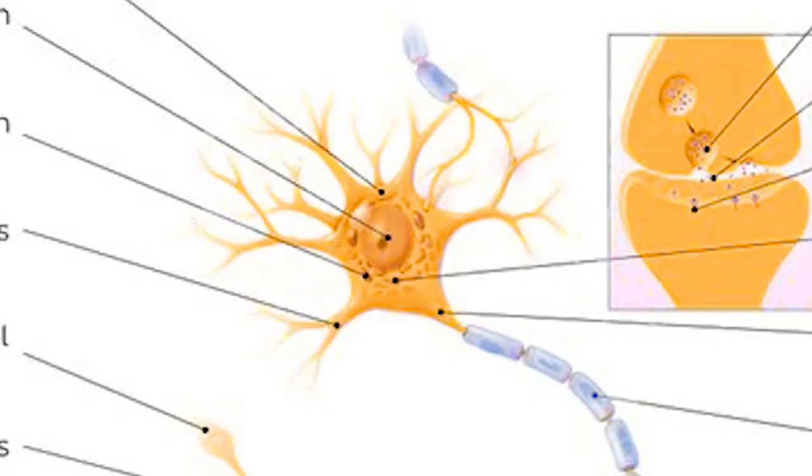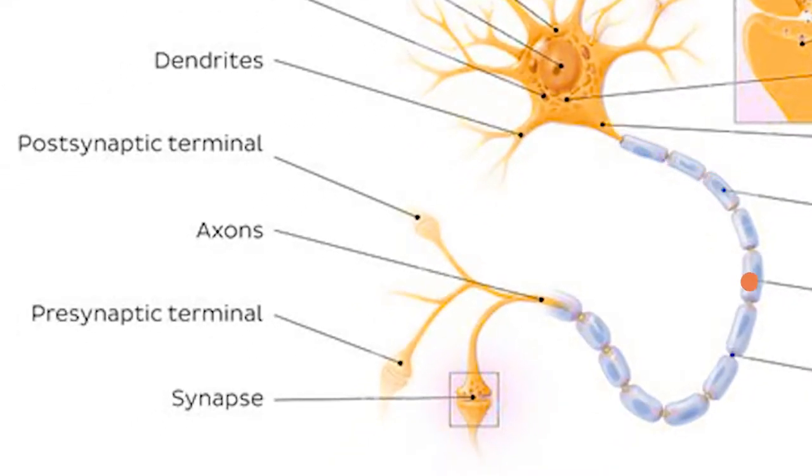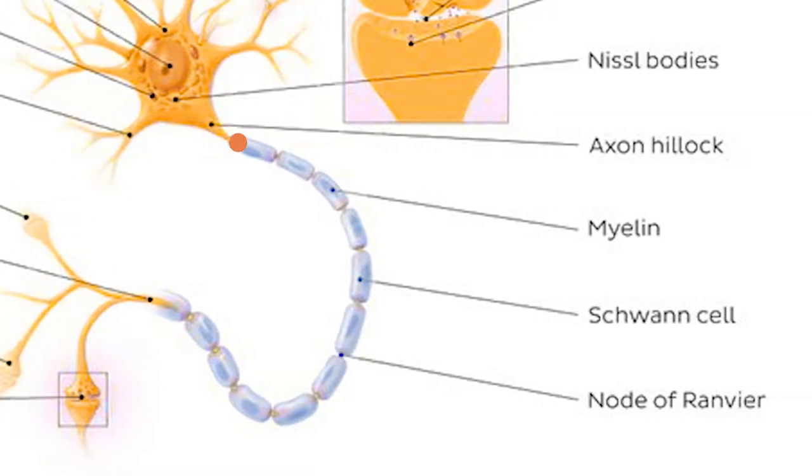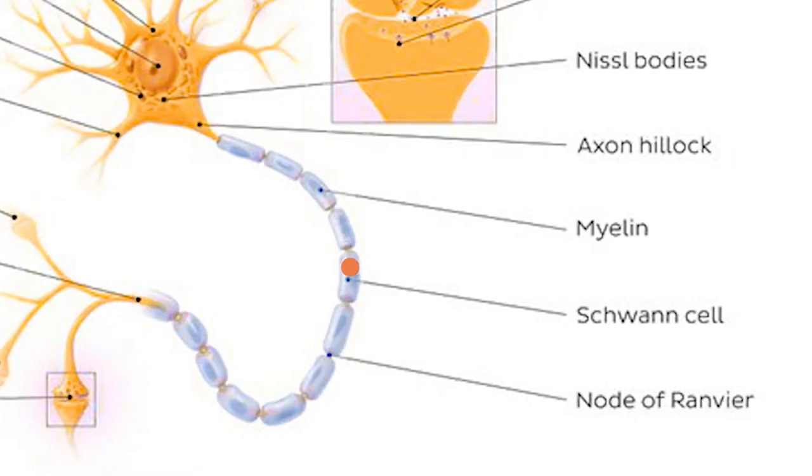Extending from the cell body, we have dendrites, which receive signals from other neurons. Attached to the body is the axon, which carries impulses that are sent from one neuron to the next. Along the axon are oligodendrocytes, or Schwann cells, which speed up the transmission of signals.